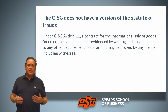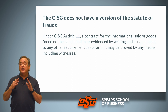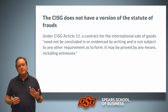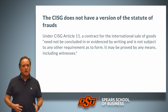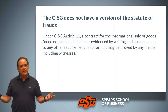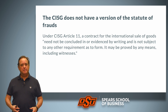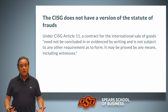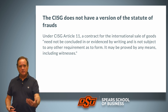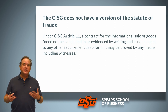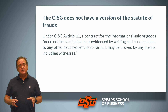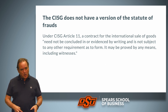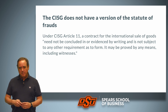The CISG does not have a version of the Statute of Frauds. Under the CISG, there is no requirement for a contract to be in writing — a small contract, a large contract, even a multi-million dollar contract can be a simple oral contract. The terms of the contract can be proven by any means: negotiations, emails, letters, phone calls, text messages. The key point to remember is that no writing is required for contracts governed by the CISG.